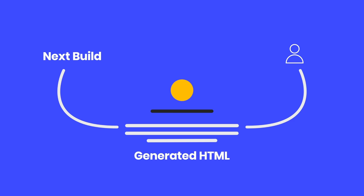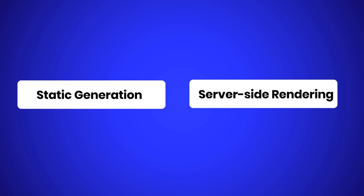You can create a hybrid Next.js app — using Static Generation for most pages and Server-Side Rendering for others. Next.js recommends Static Generation whenever possible, since pages can be built once and served by a CDN, which is much faster than server-rendering on every request. Use Static Generation for marketing pages, blog posts, and e-commerce listings. Use Server-Side Rendering when your page displays frequently updated data that changes on every request.